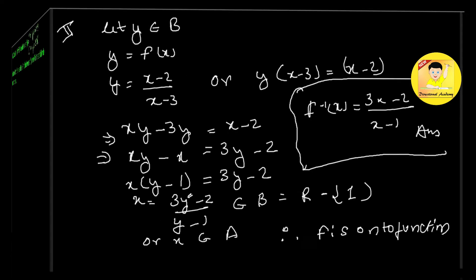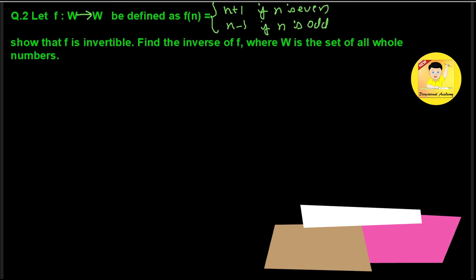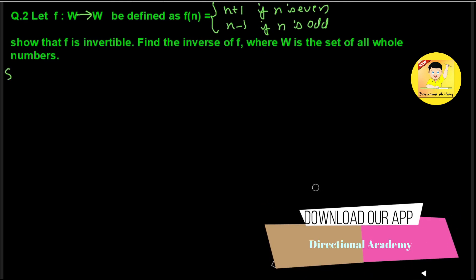Question number 2: Let f map W to W (whole numbers), defined as f(n) = n+1 if n is even, and n-1 if n is odd. Show that f is invertible and find the inverse of f, where W is the set of whole numbers. We need to do three things: first, one-to-one proof; second, onto proof; and third, find f inverse of x.